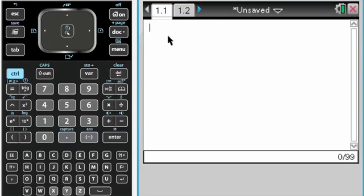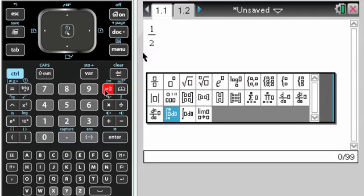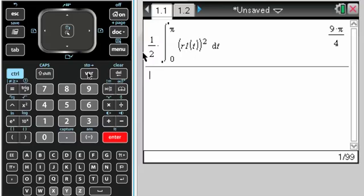Having defined the function now, one half the integral from zero to pi of, and now I'm going to actually use the function r1 of. I use t, it doesn't really matter, it's just a dummy variable at this point, and then dt, and it gives me that.